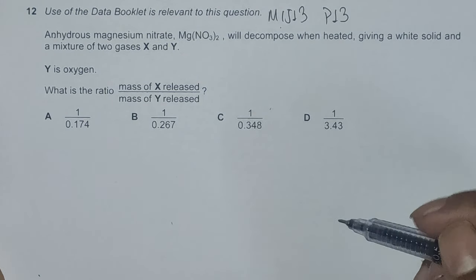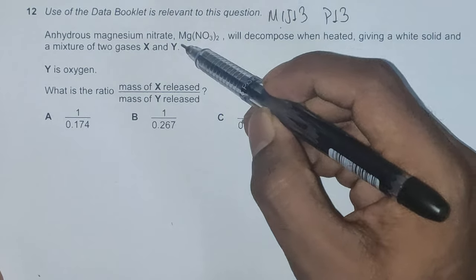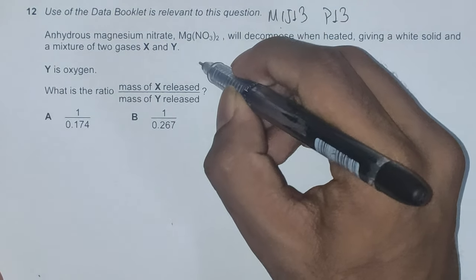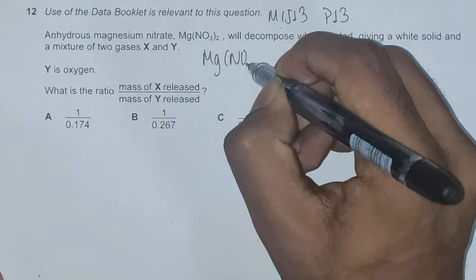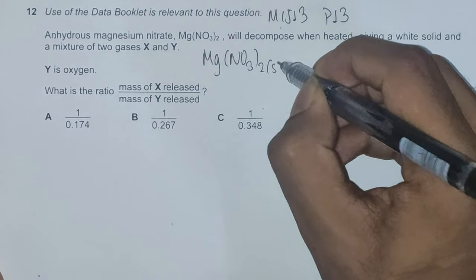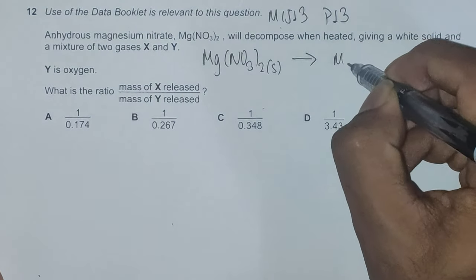So first things first, we are going to construct an equation of thermal decomposition of anhydrous magnesium nitrate. We have Mg(NO3)2, this is in solid state. This gives us magnesium oxide.